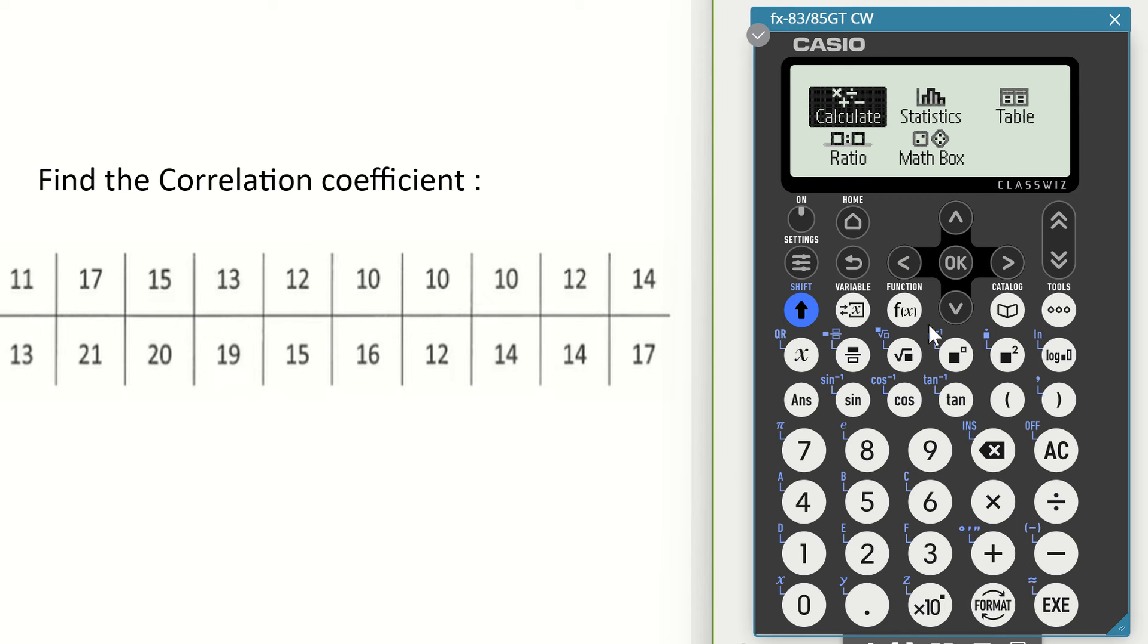We need to set our calculator to statistics mode, so from the centre dial, arrow across to statistics and click on OK. We then scroll down to two variables and click on OK once again.